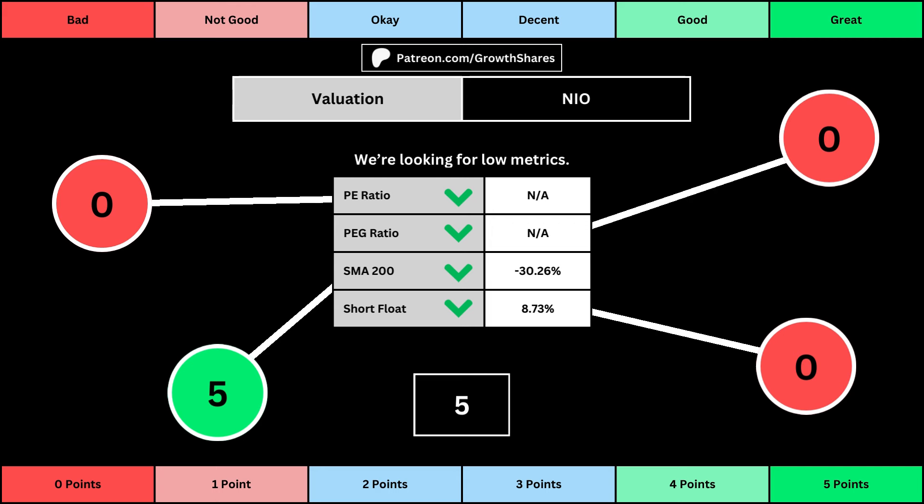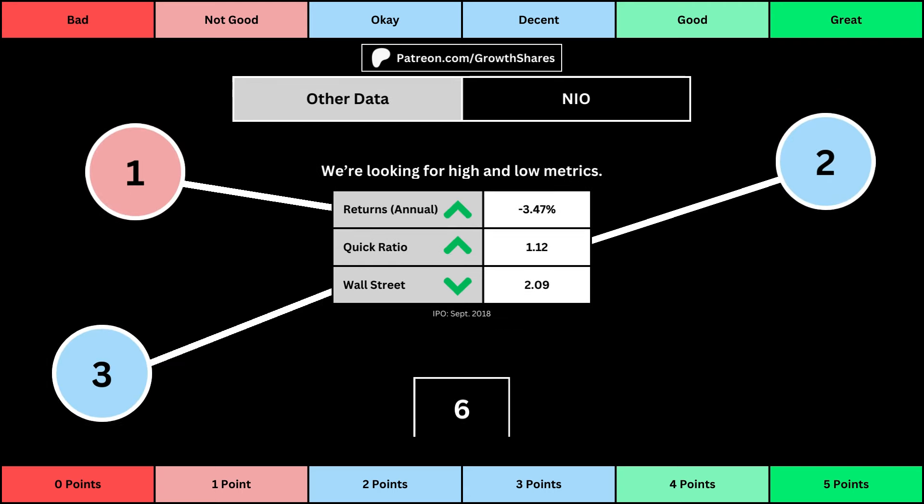Short float is basically how bearish other investors think of the stock. For these four metrics, we want the values to be as low as possible — that will give us a higher point total within the bubbles. The fourth set of metrics looks at other relevant data. First is the stock's performance over a set period of time, usually 10 years, but if the stock doesn't go that far back, we go with the earliest data up to 10 years.